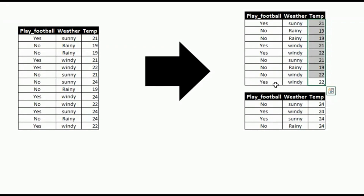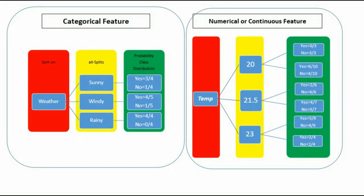The total number of possible splits are 4: 1 split on the categorical weather variable, and 3 splits available on the numerical temperature variable. So out of all 4 splits, we have to find out the best split, and for finding out the best split we have multiple methods available. Here we are going to discuss about entropy.